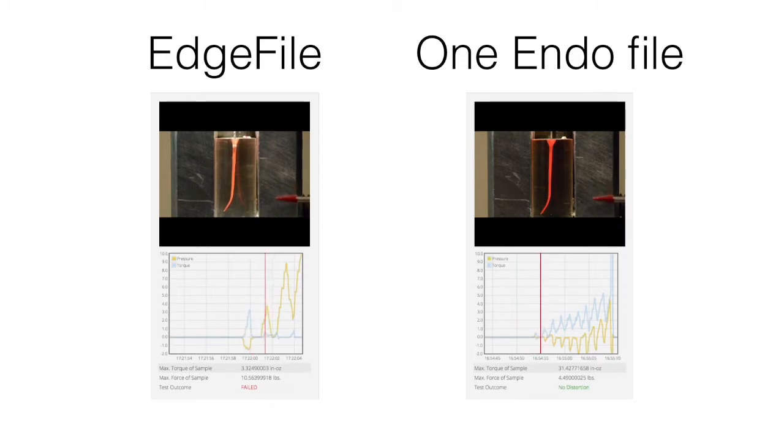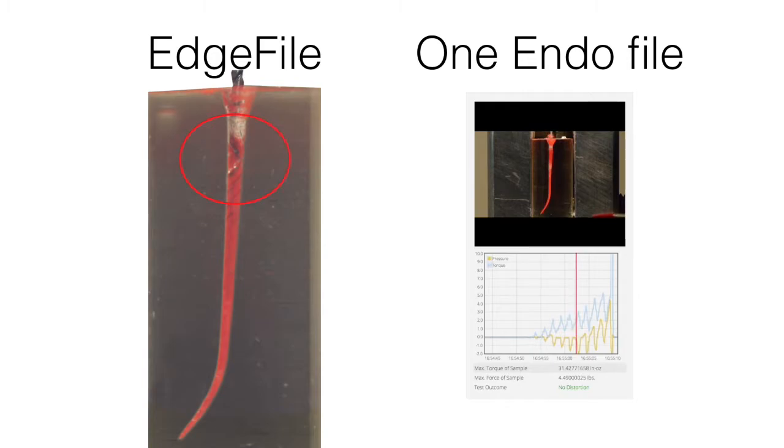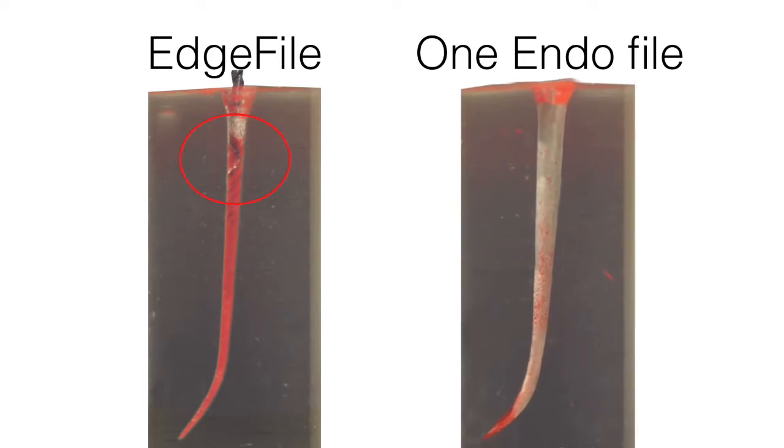In this particular instance, we're comparing a 25-04 One Endo file to the same size Edge file X7, to determine which will prepare the most canals with the greatest efficiency and efficacy before distorting or separating. Notice that the Edge file distorted and failed almost immediately on its first block.